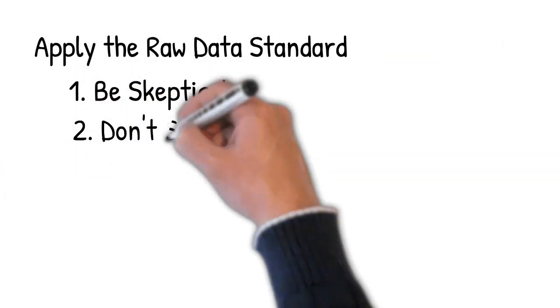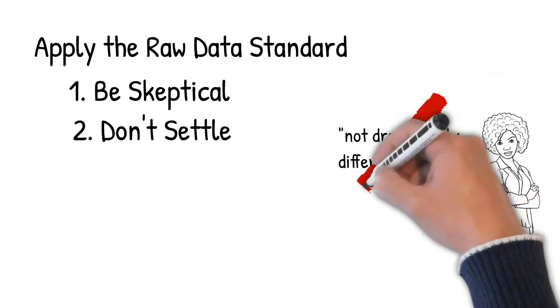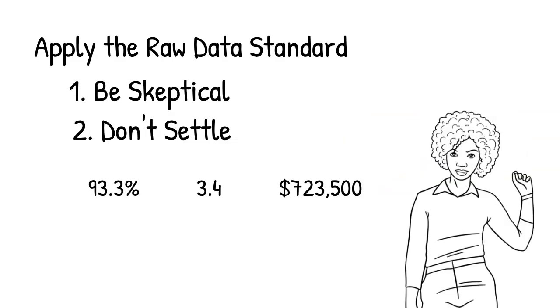Second, don't settle for subjective descriptions like 'not dramatically different.' When you read something like that, your first thought should be, well, what are the actual numbers? And your next question: are there margins of error on those numbers? And if so, what are they?